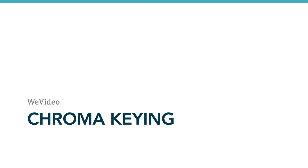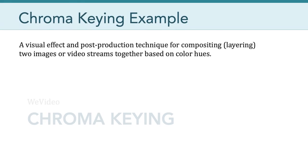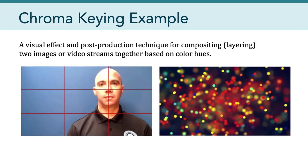Now I want to talk a little bit about chroma keying. You've probably heard of this before, but chroma keying — popularly called green screening or blue screening — is a visual effect and post-production technique for compositing two images or video streams together based on color hues. And you've seen this a million times in the news, in motion pictures, and even in the video game industry.